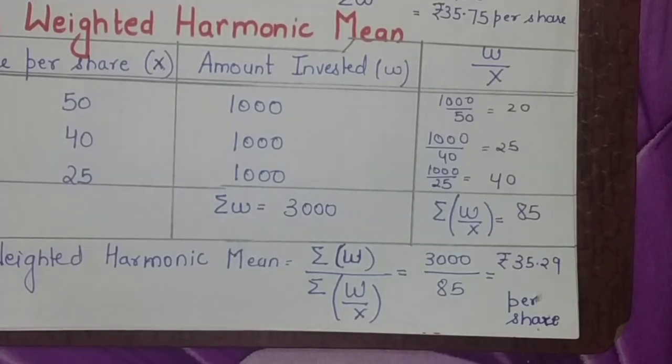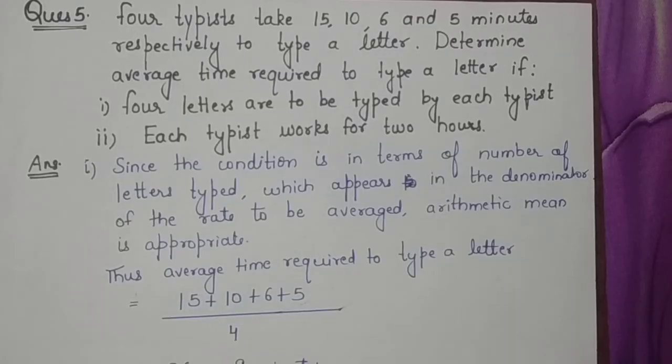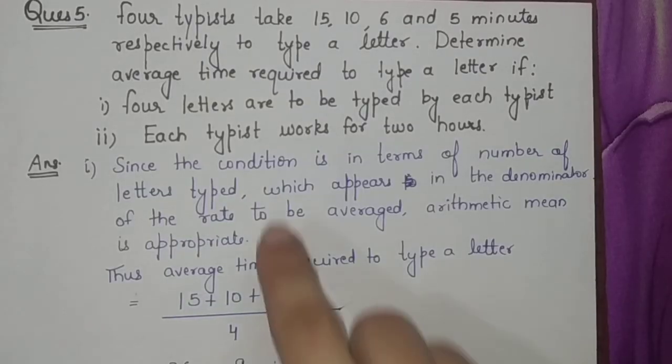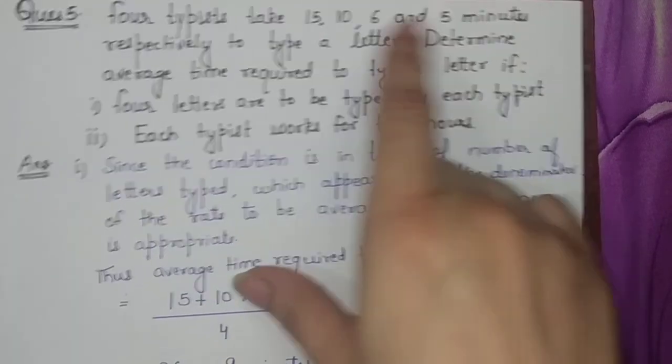Now let's move to the fifth question. This was the fourth question which is over now. You have been given: four typists take 15 minutes, 10 minutes, 6 minutes, and 5 minutes respectively to type a letter. Determine the average time required to type a letter if four letters are to be typed by each typist.